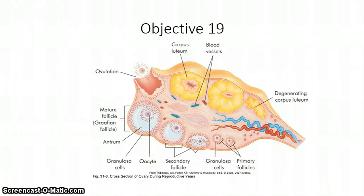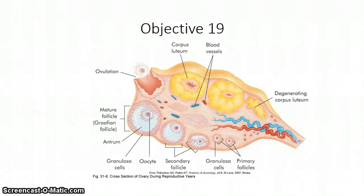Now we're going to turn our attention to the ovarian cycle and talk about how the oocyte matures and is released from the ovary for potential implantation and conception. Before ovulation, typically 1 to 30 follicles begin to mature in each ovary under the influence of follicle-stimulating hormone and estrogen. There is a pre-ovulatory surge of luteinizing hormone that affects a specific follicle. The oocyte then matures, ovulation occurs, and the empty follicle begins its transformation into the corpus luteum.